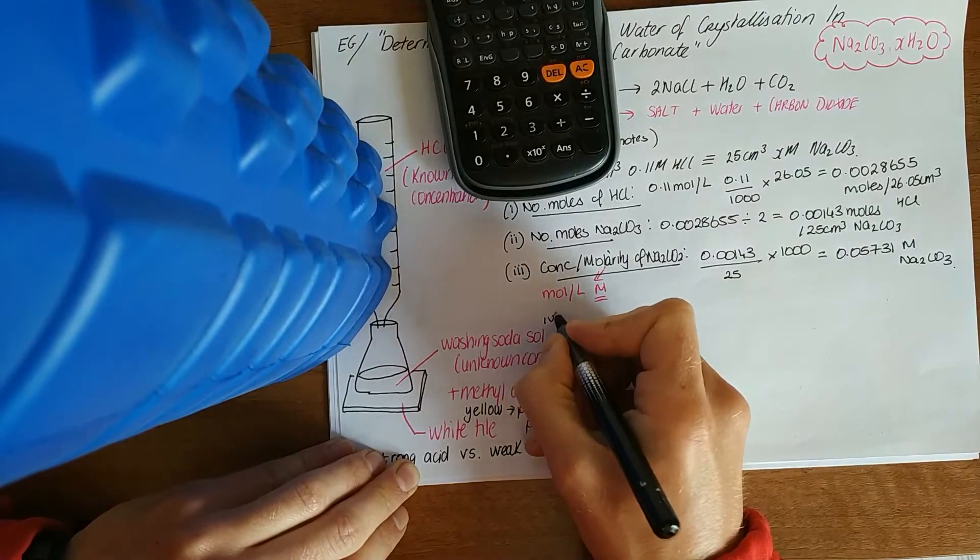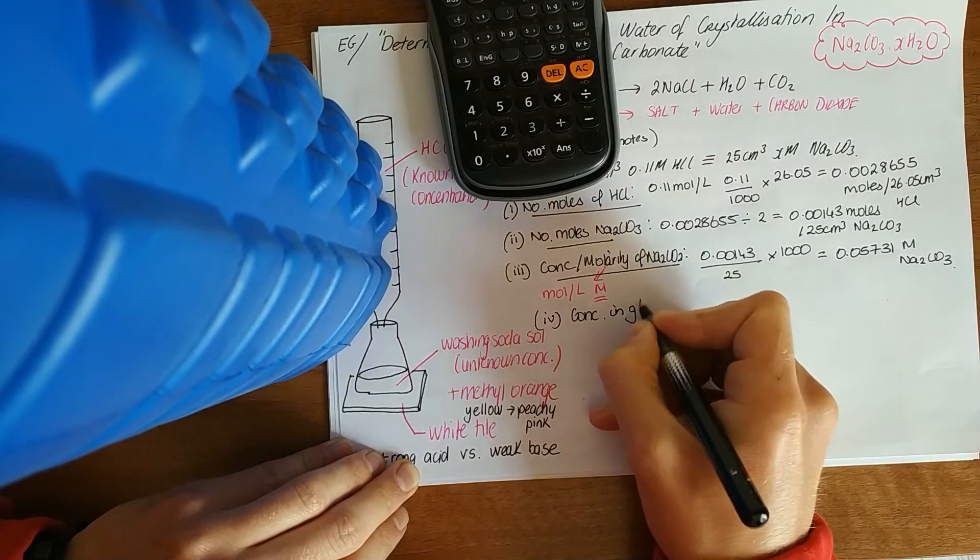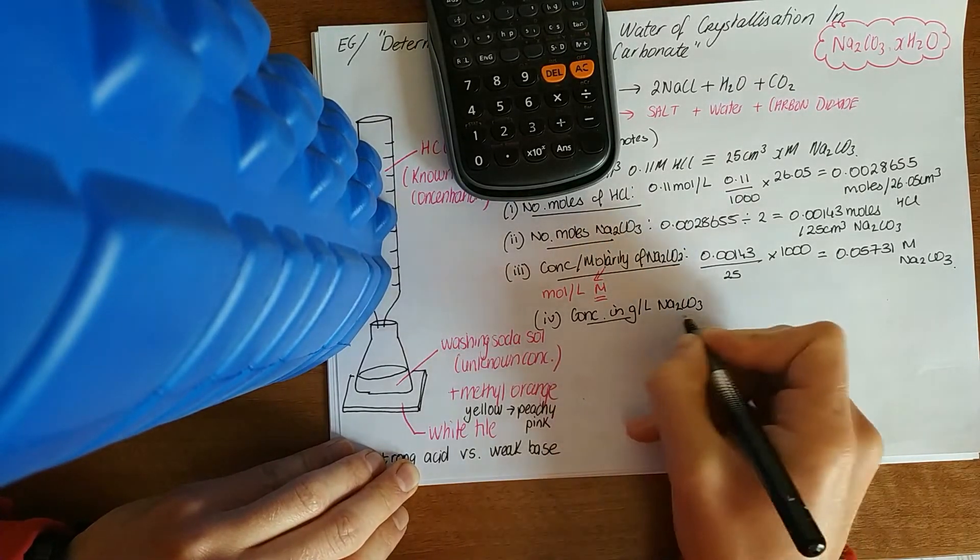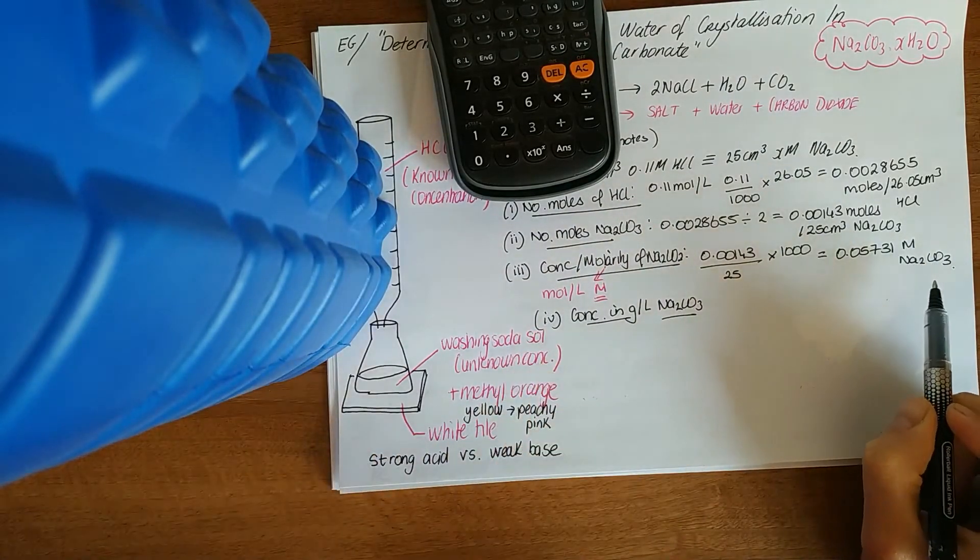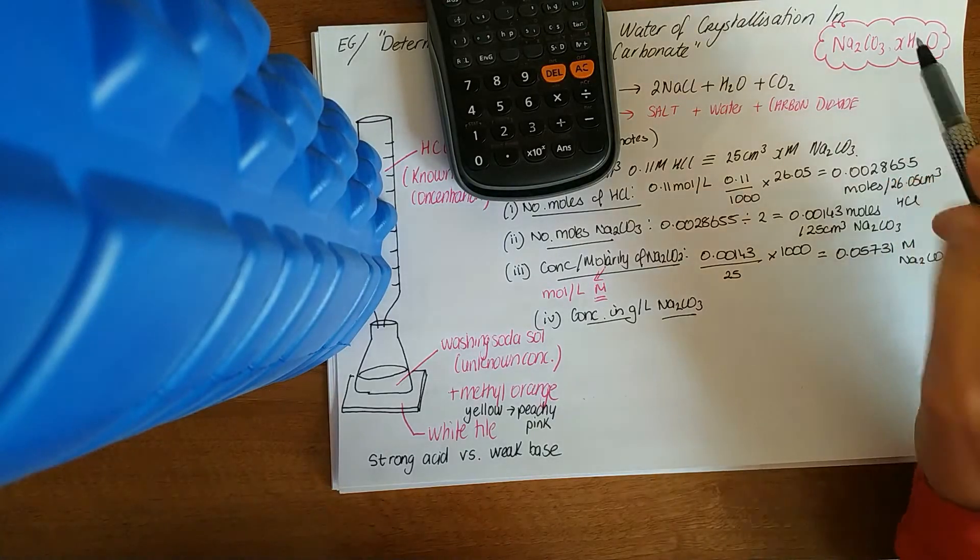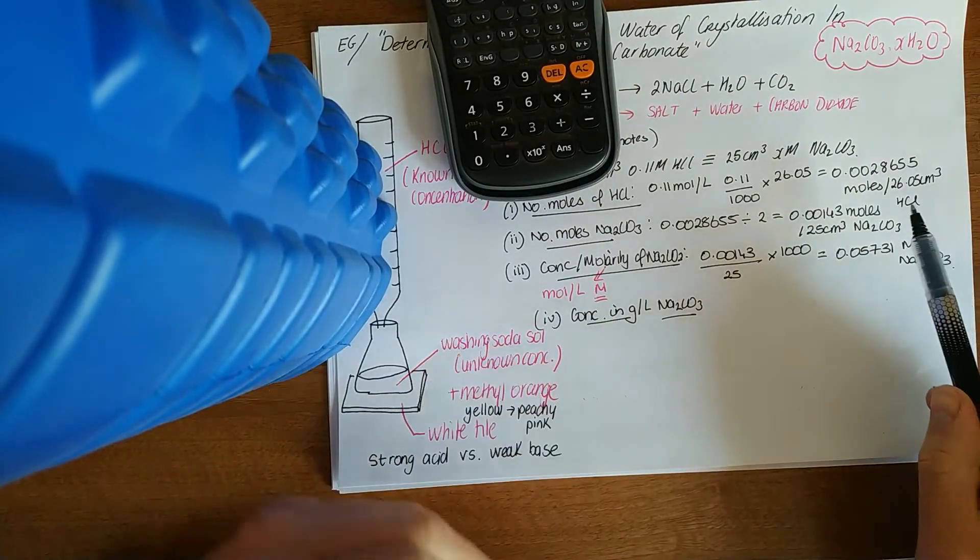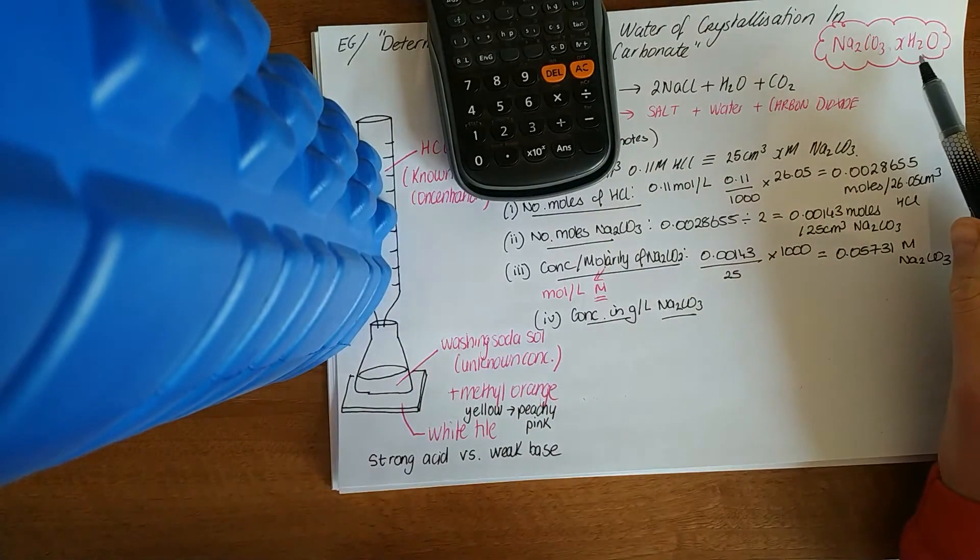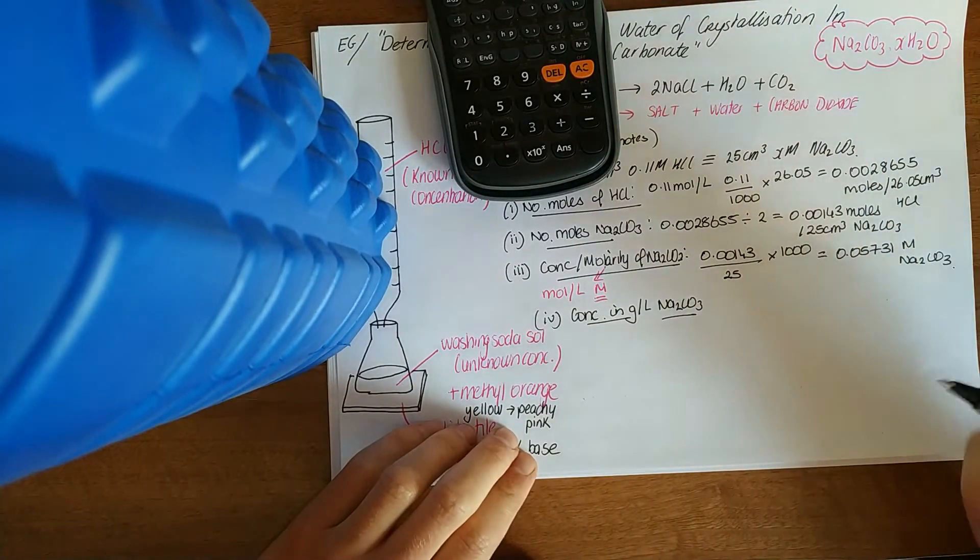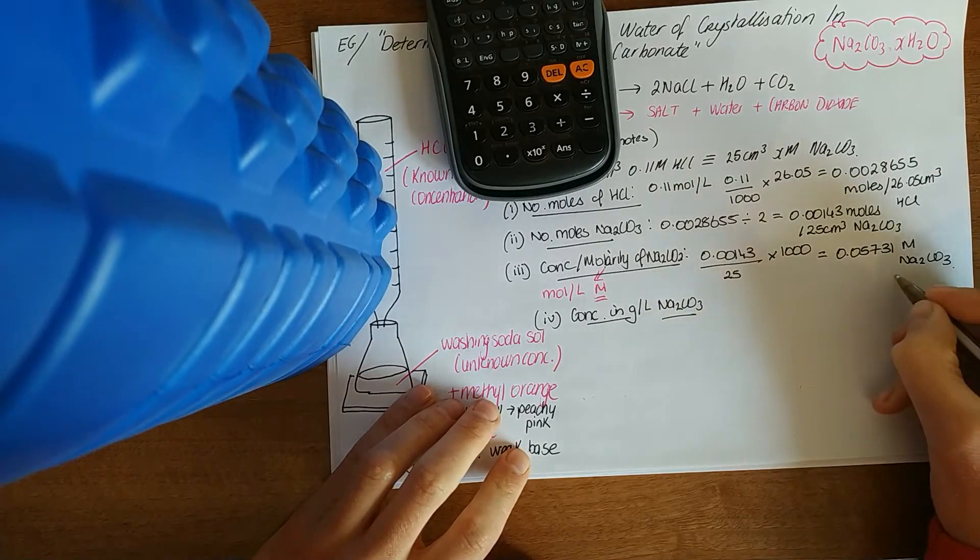They'll probably ask you the concentration in grams per litre. Even if they don't, you need it to do this. We're going to work out how much grams per litre there are of sodium carbonate in hydrated sodium carbonate, and then be able to take away this figure from the crystals to work out how much water is in these crystals. We've got the number of moles per litre. To go to grams per litre, when you're leaving moles, you're multiplying.